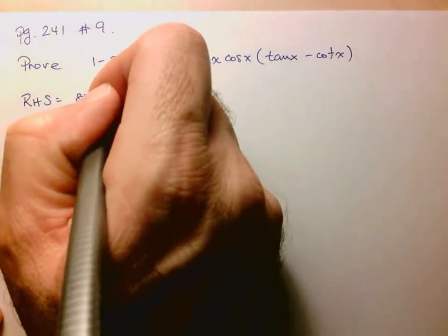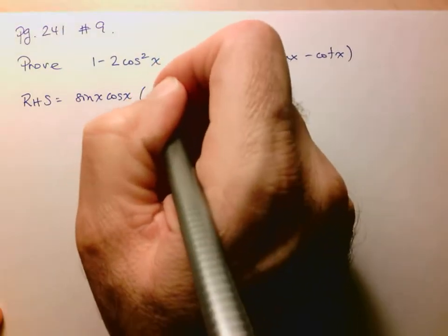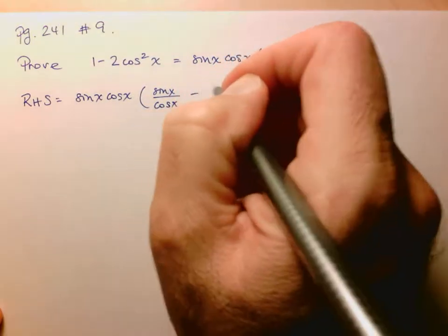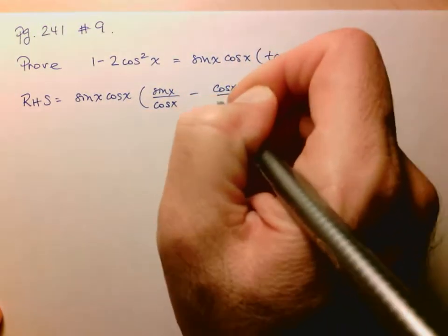So we've got sine x cos x, and here we've got sine x over cos x, minus cos x over sine x.